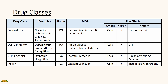Sodium glucose co-transporter 2 inhibitors, which are the gliflozins, inhibit glucose reabsorption in the kidneys. Patients will excrete more glucose in the urine, hence increasing the risk of UTIs. This drug class causes weight loss and does not cause hypoglycemia.